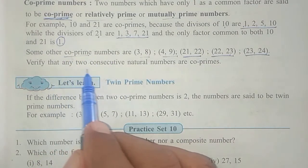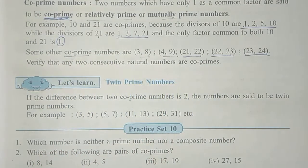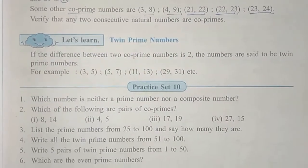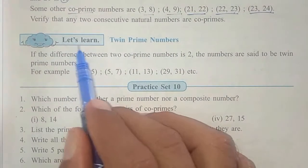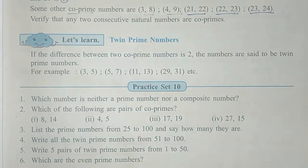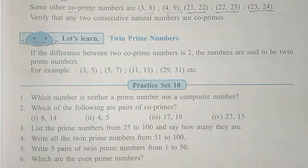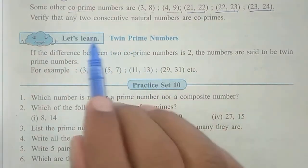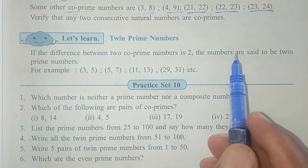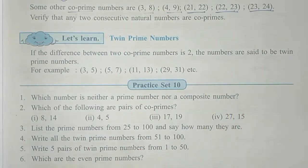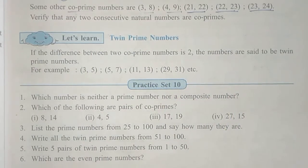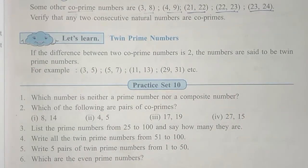Verify that any two consecutive natural numbers are co-primes. Next activity: let us learn about twin prime numbers. We have learned co-primes — any two numbers whose common factor is only 1 are called co-prime numbers.